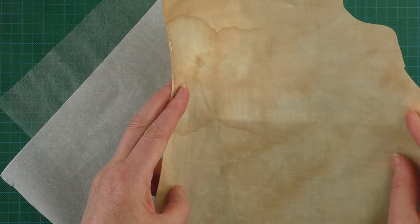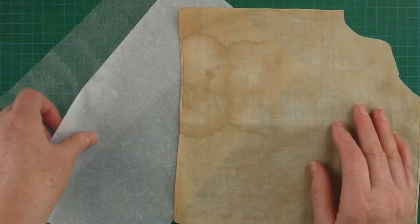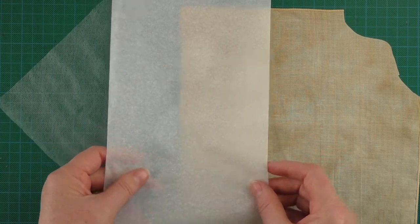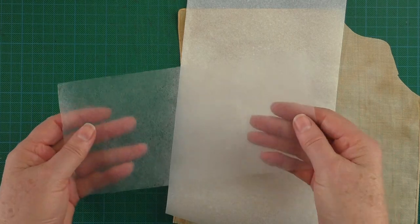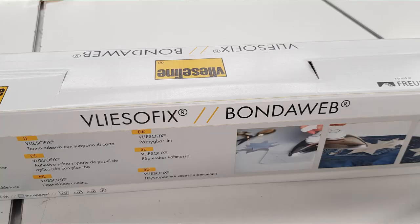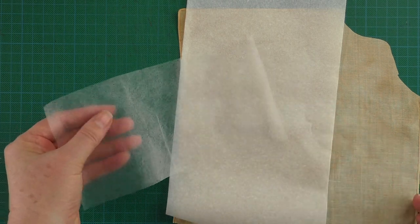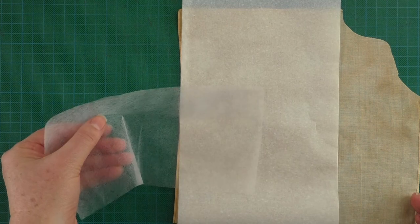So you need your cloth, you need some tissue paper, preferably white, and you need some heat and bond, or in Australia we call it bonderweb. Now the bonderweb is just an iron-on double-sided webbing.